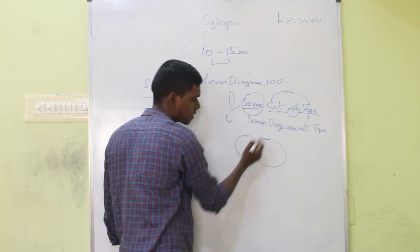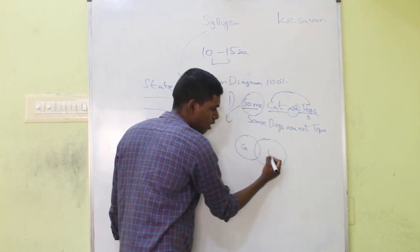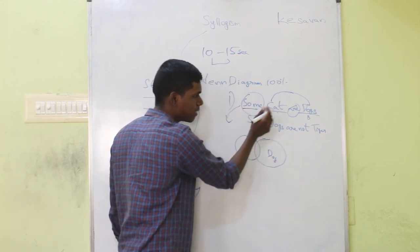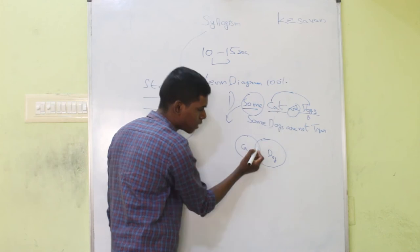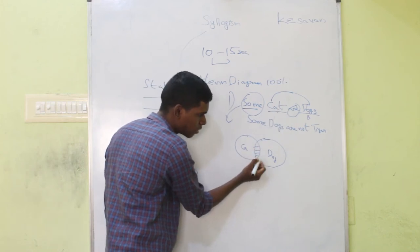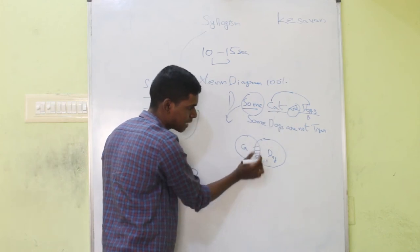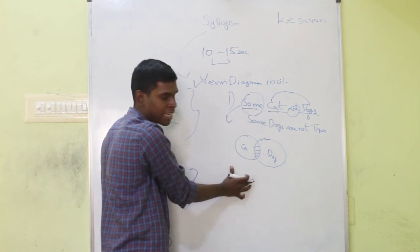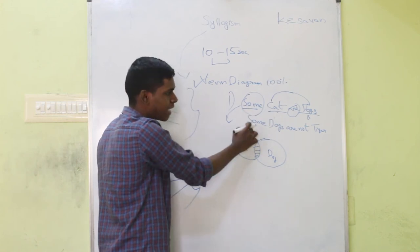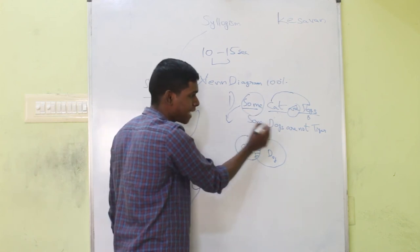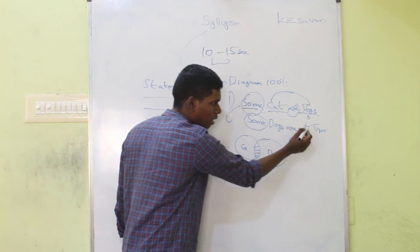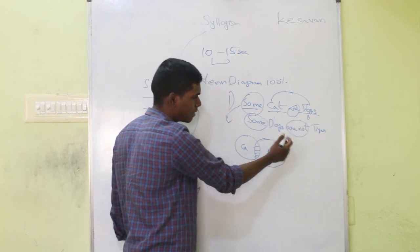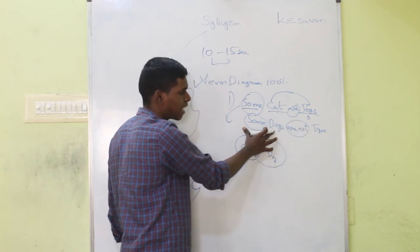If 'some cats are dogs,' you draw cats and dogs with an intersection — some cats exist in the dog circle. That is the meaning. Similarly, 'some dogs are not tiger' means there is no condition forcing dogs to be tigers — some dogs fall outside the tiger circle. This is the corresponding diagram.